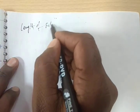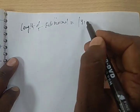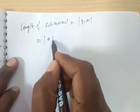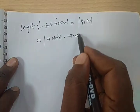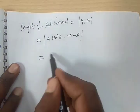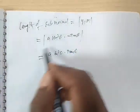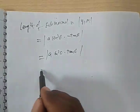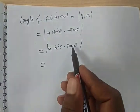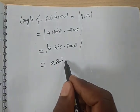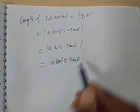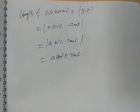The last one is length of sub-normal. The formula is |y₁ · m|. Substituting: y₁ = a sin³θ and m = −tan θ. Removing the minus (modulus, since the function is positive), we get a sin³θ · tan θ. So the length of sub-normal equals a sin³θ · tan θ. If you like this video, subscribe to this channel for more videos. Thank you for watching.